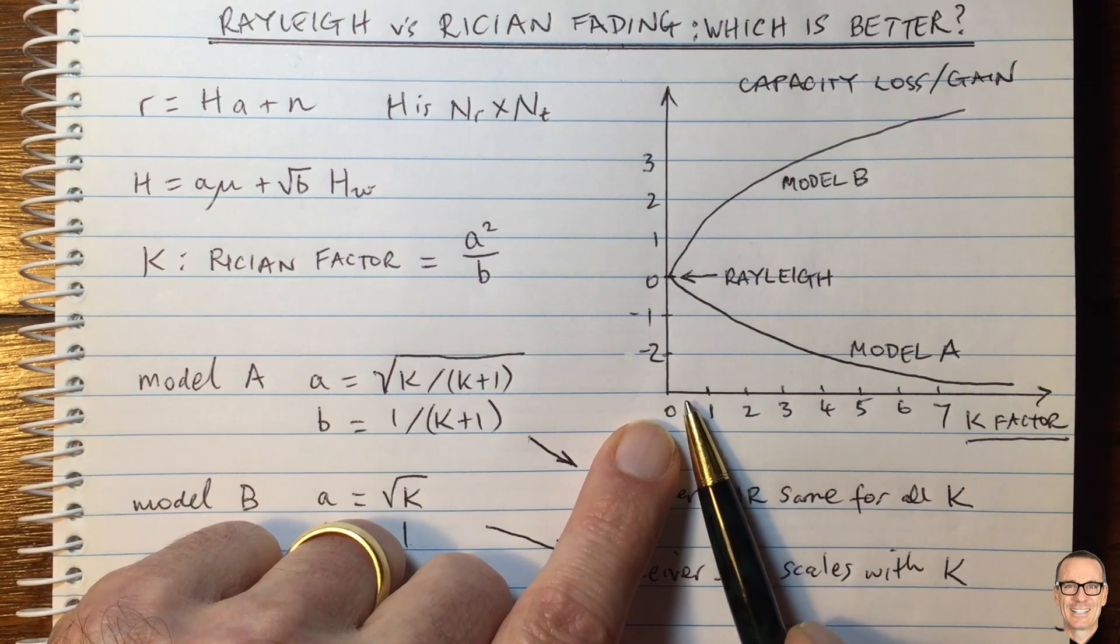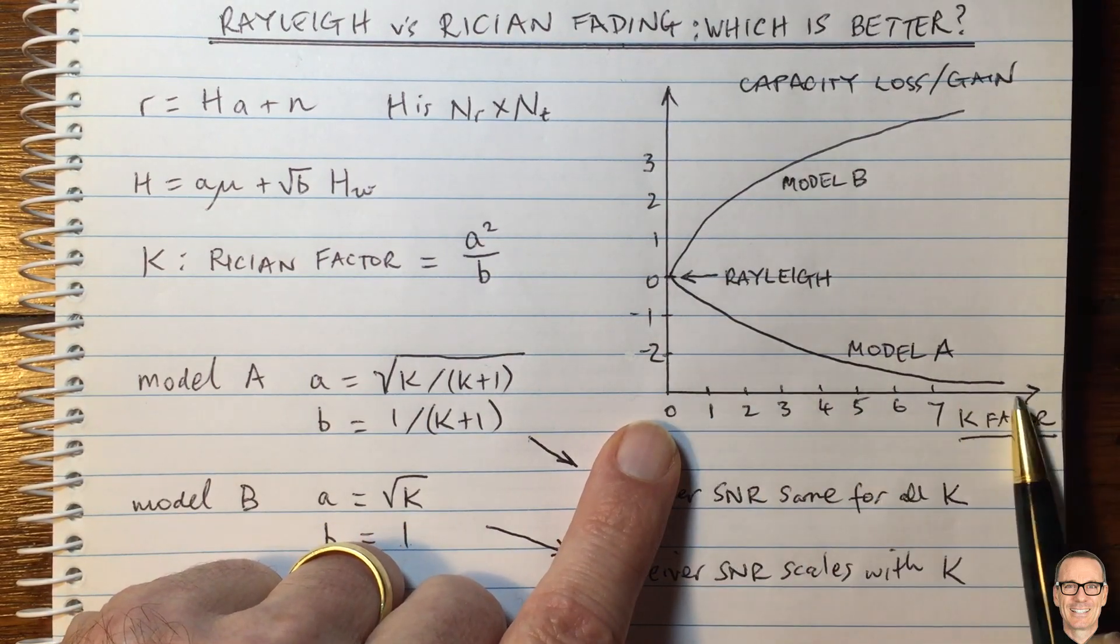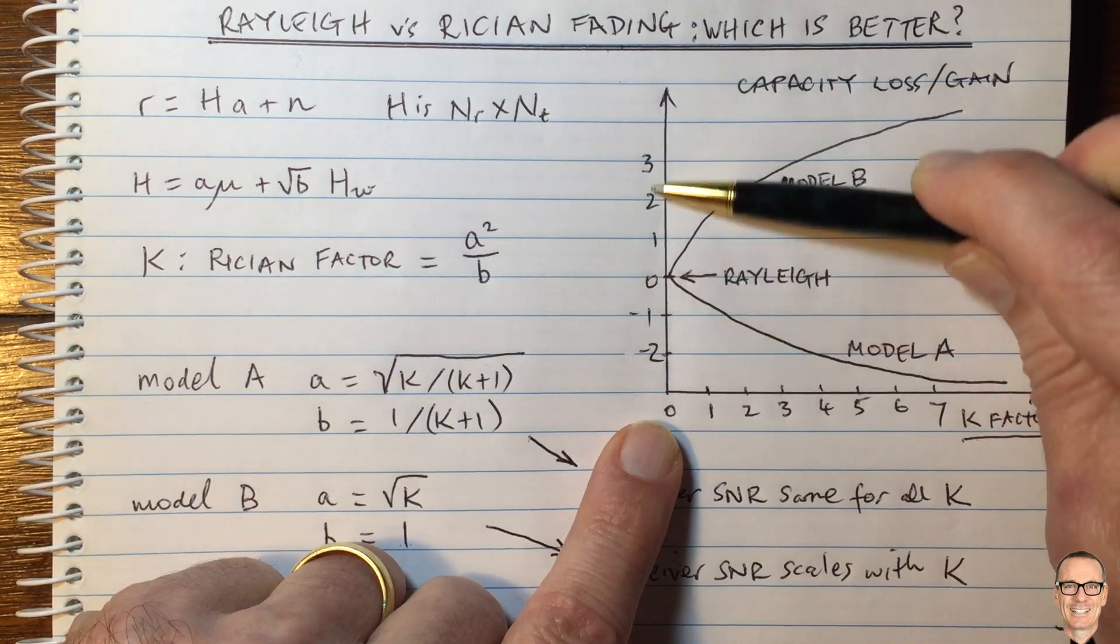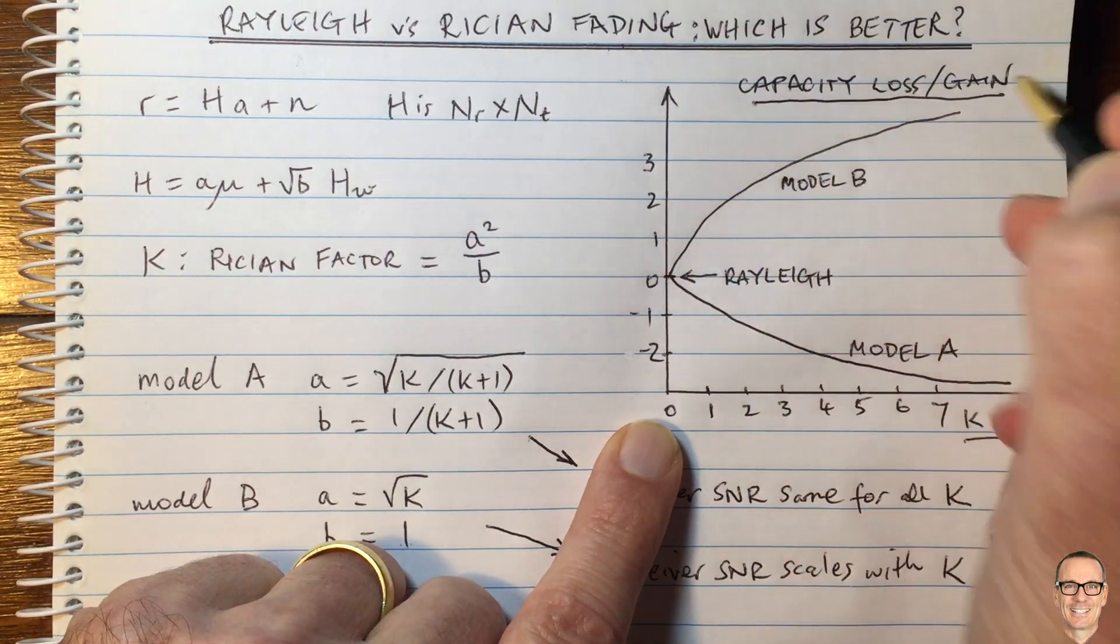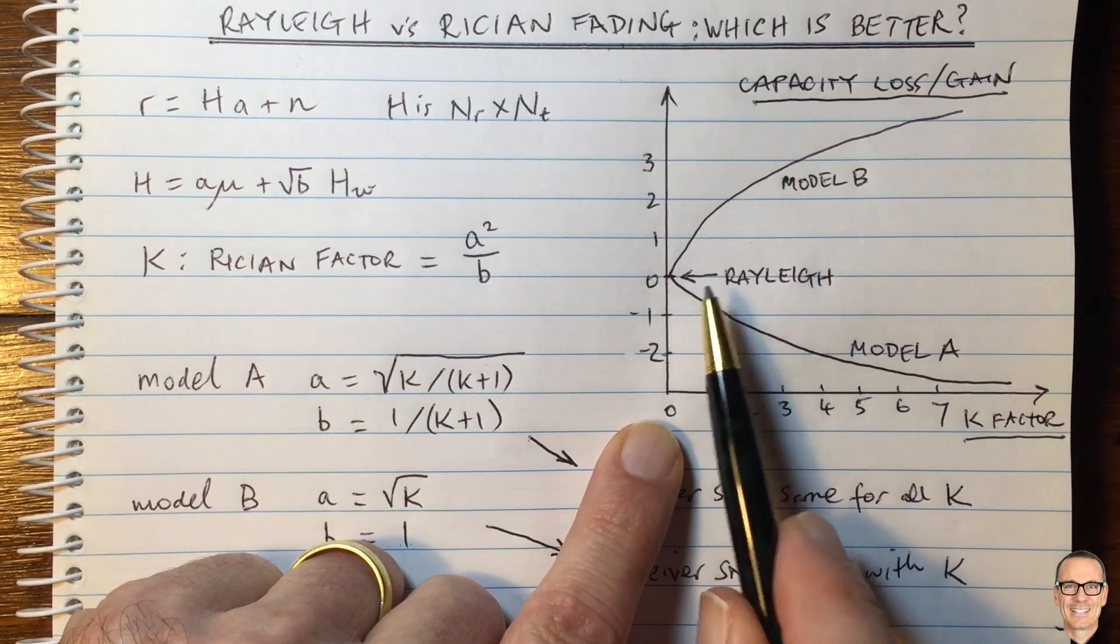Let's see how that is shown in this curve. Here's a curve of the K factor versus the capacity loss or gain as a result of that K factor.